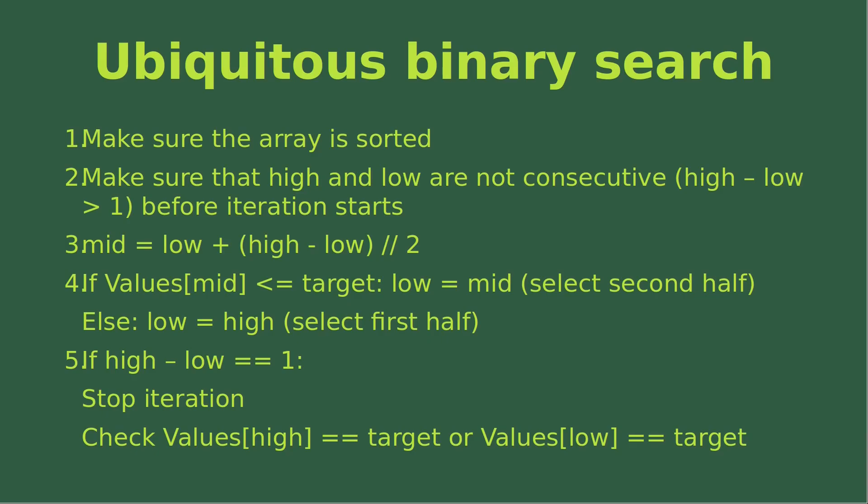There are a few steps to follow for this search process. First, we have to make sure that the array is already sorted. Then we have to make sure that the high and low indexes are not consecutive — that means the high index minus the low index has to be larger than one before I can do any iteration in the search process.